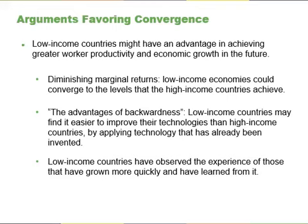For example, raising the average education level of the population by two years — from a tenth grade level to a high school diploma — while holding all other inputs constant would produce a certain increase in output. An additional two-year increase so that the average person had a two-year college degree could increase output further, but the marginal gain could be smaller. Yet another additional two-year increase to a four-year college bachelor's degree would increase output still further, but the marginal increase could again be smaller. Low-income countries tend to have lower levels of human and physical capital, so investment in capital deepening should have a larger marginal effect in these countries than in high-income countries where levels of human and physical capital are already relatively high.